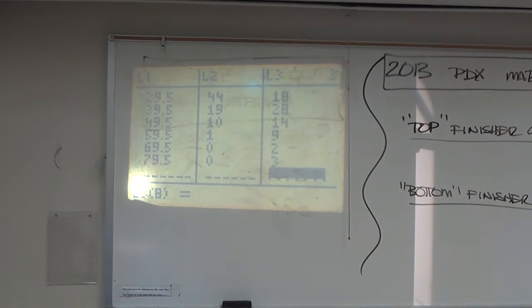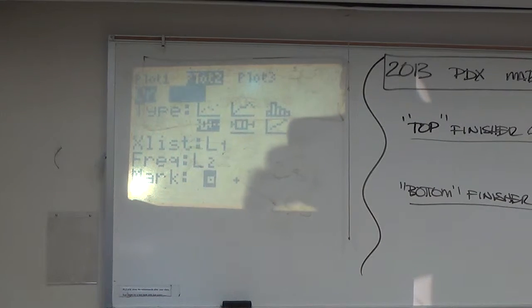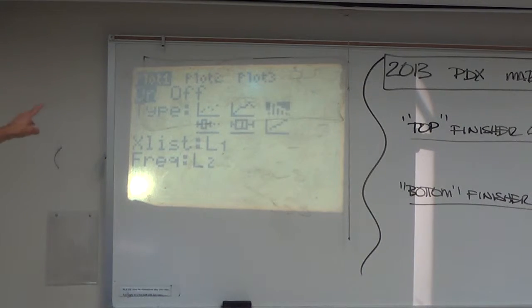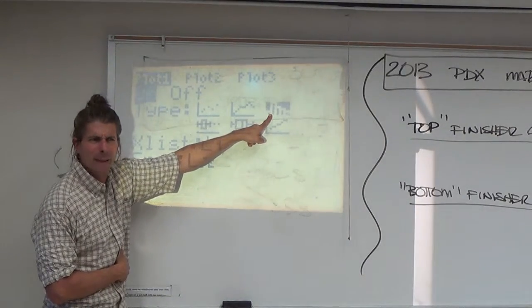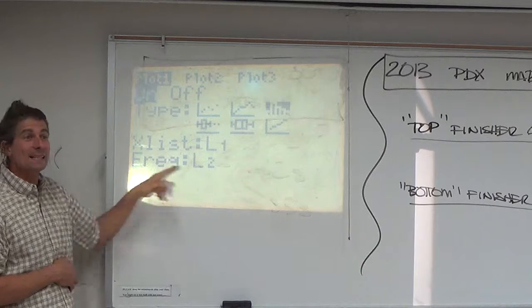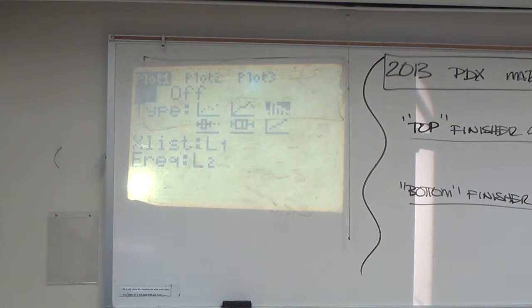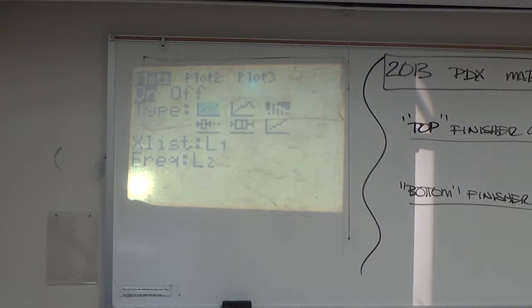Let's take a look at the top finishers first. Second Y equals, let's turn one plot on. Let's just look at plot number one on. Make sure it's a histogram. Make sure the X list is at L1. Here's the kicker though — make sure the frequency says L2. It probably says 1 right now in your machine, but you don't want 1 because that would mean there's one 19-and-a-half-year-old, one 29-and-a-half-year-old, one 39-and-a-half-year-old, one 49-and-a-half. So L2 — just second 2.